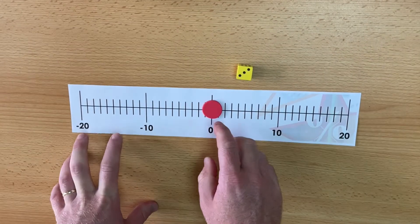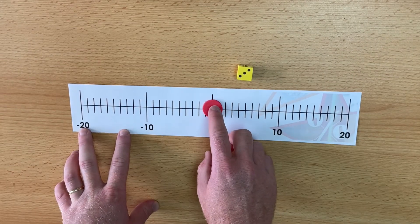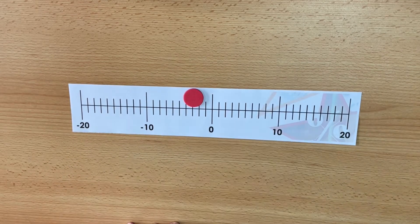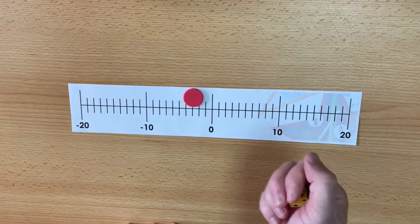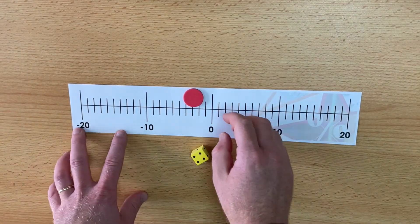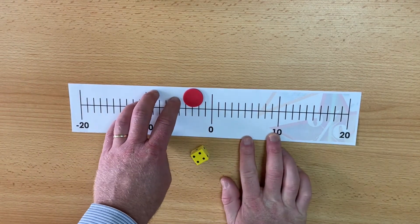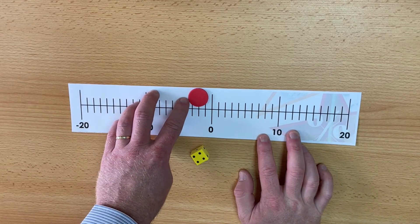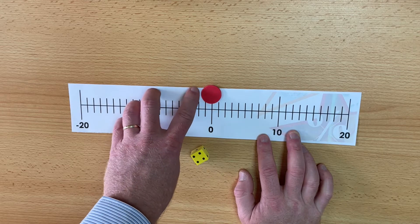So player one has just scored a three so they will move the counter one, two, three and then it is player two's turn to roll the dice. They have got a four so they will move the counter four spaces the opposite direction. One, two, three, four.